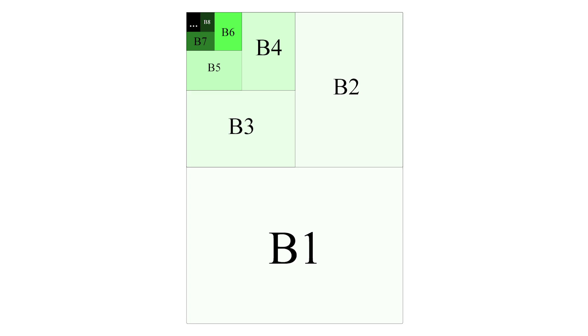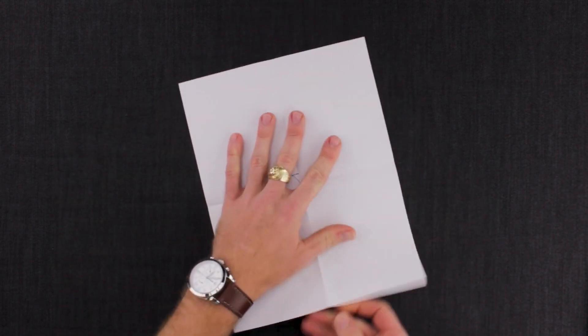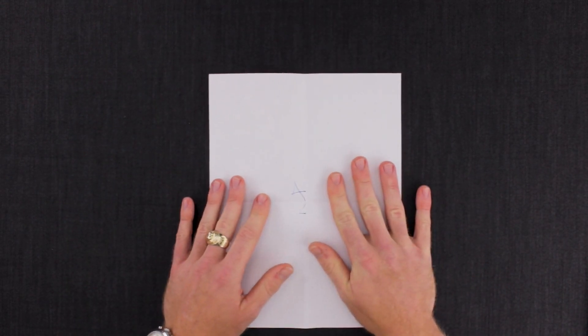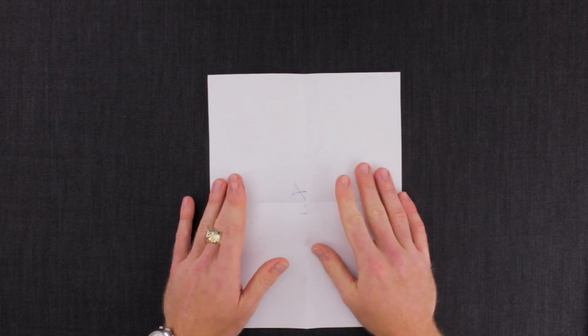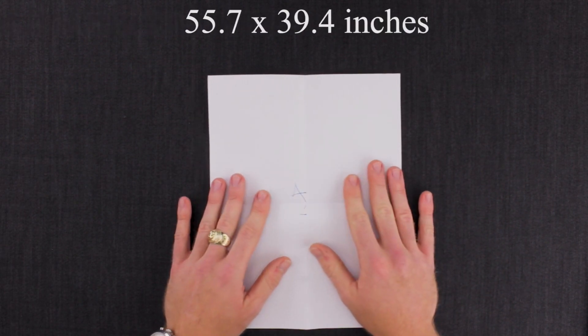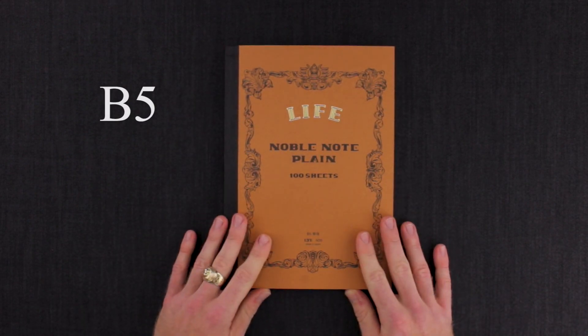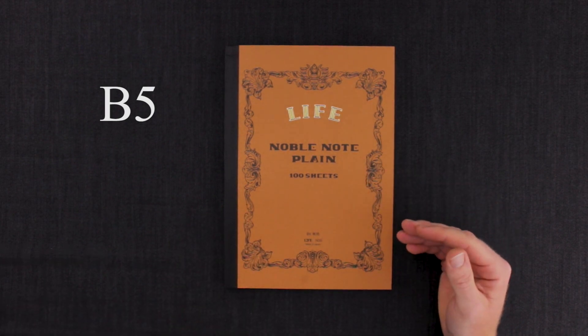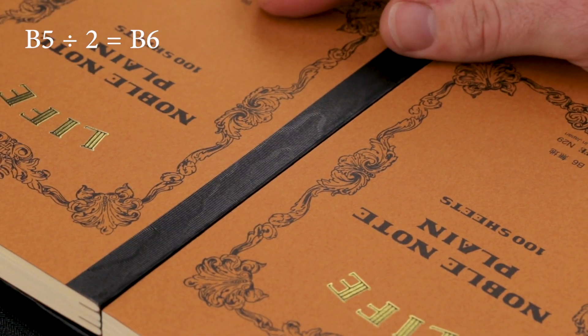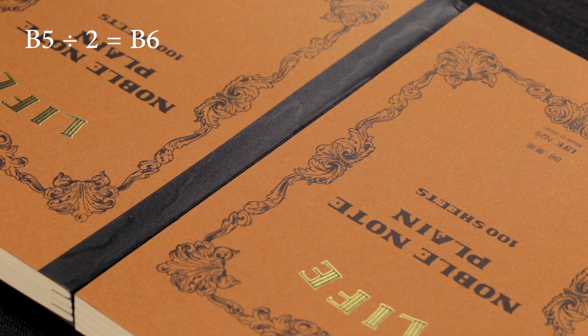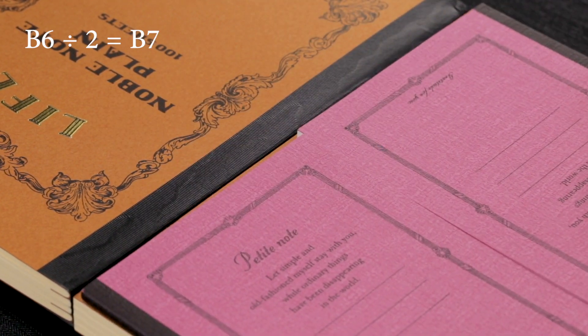The B series is gonna have the same concept except that the starting size, that B0 size that we started off with, is gonna be different. It's gonna be a little bigger actually. The B size starts at 55.7 by 39.4 inches. So basically where that starts being the usable size is gonna be the B5 size. You're gonna fold that again, you get B6. And then if you wanted to fold that, you get B7.